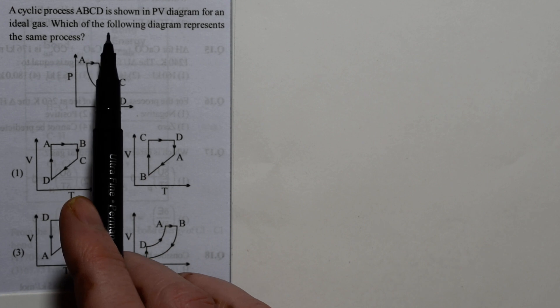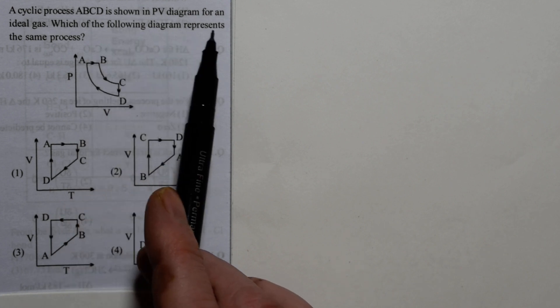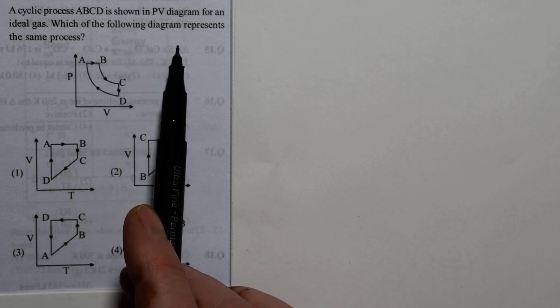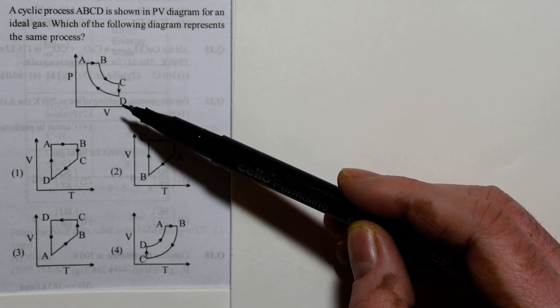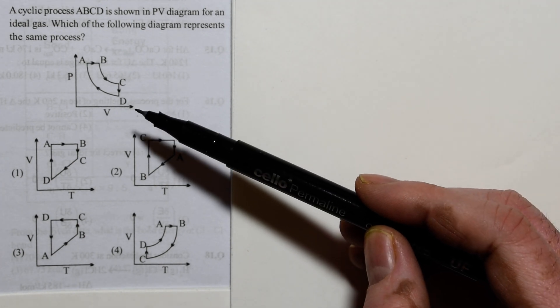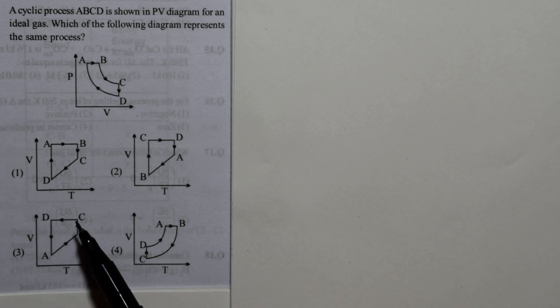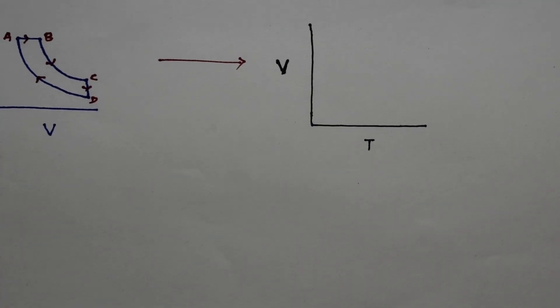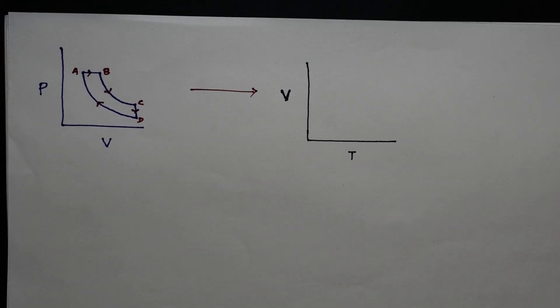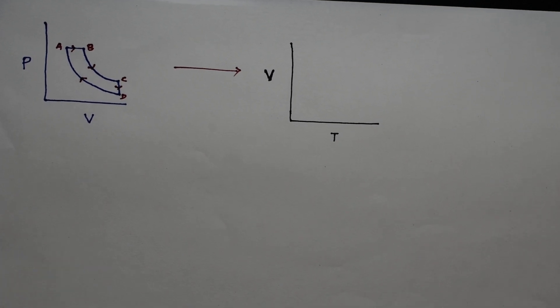A cyclic process ABCD is shown in a PV diagram for an ideal gas. The question asks which diagram represents the same process. Here, a PV diagram of a cyclic process is given, and the options are in a Volume versus Temperature diagram. Let's see how we can convert the PV diagram into a VT diagram.